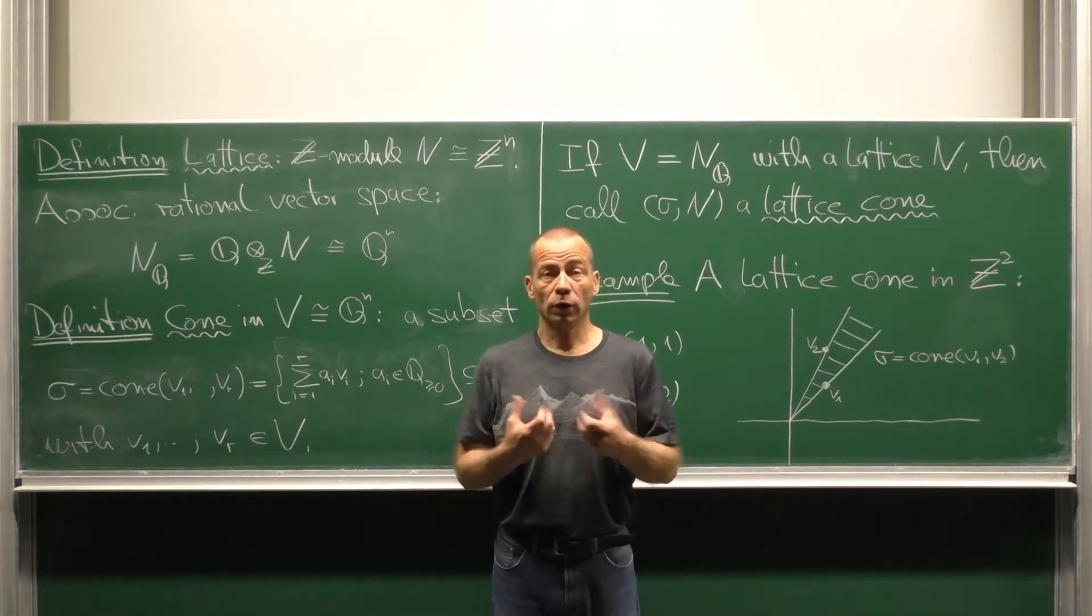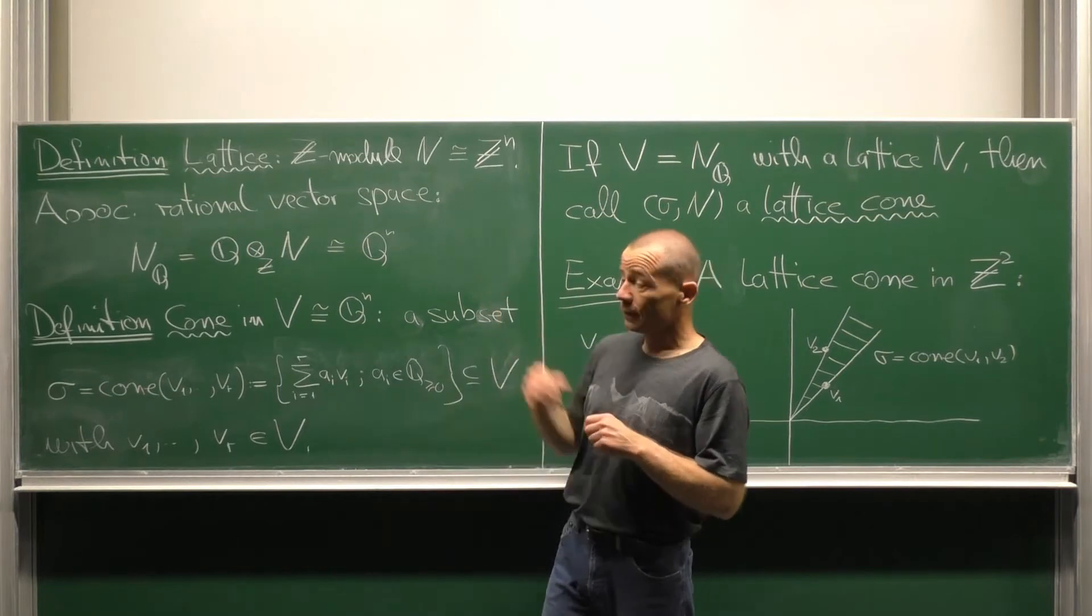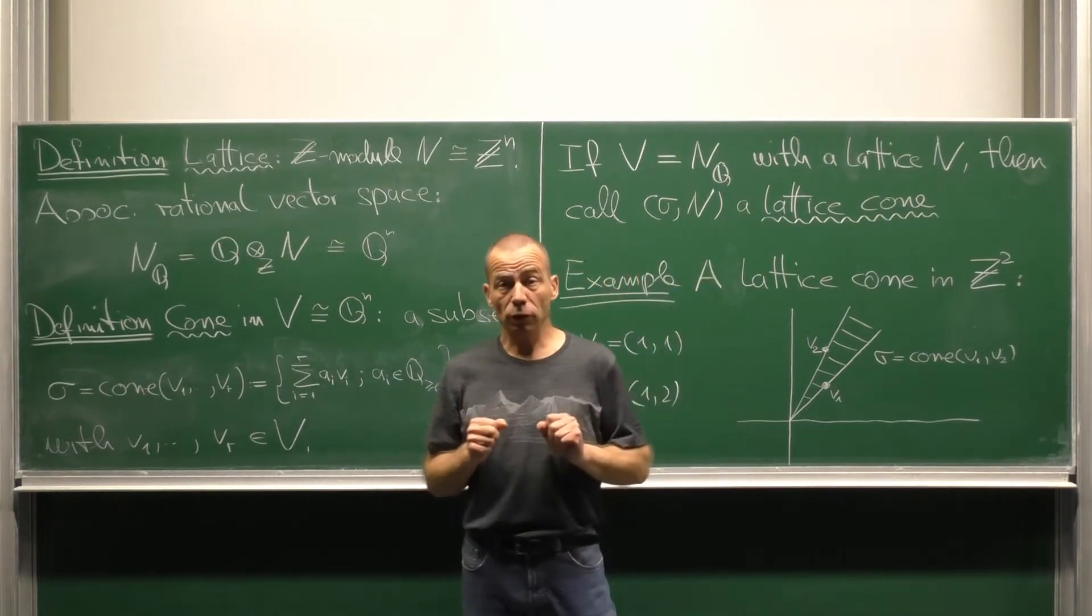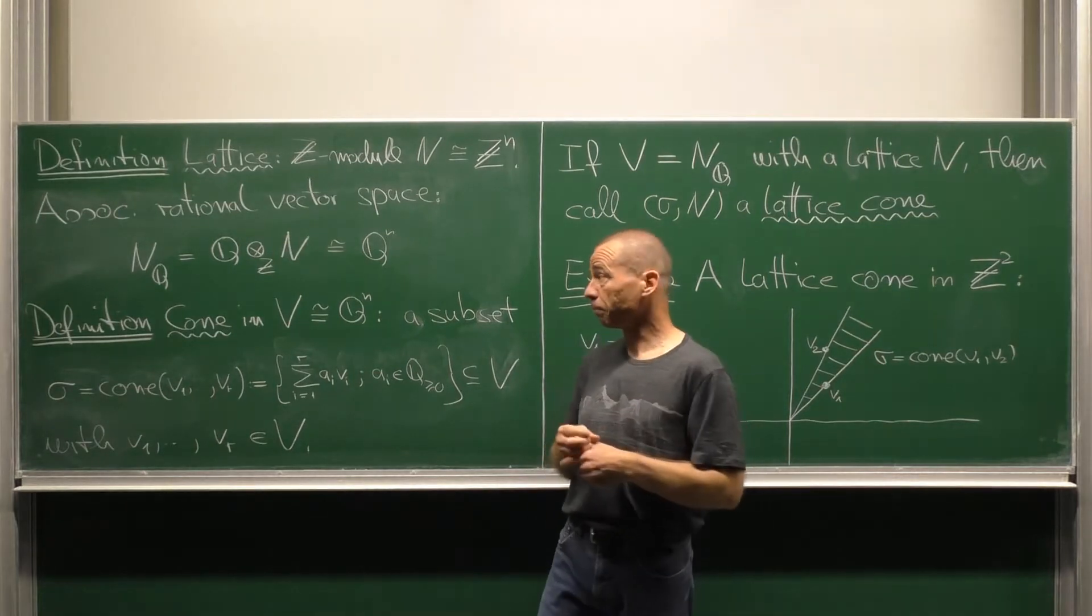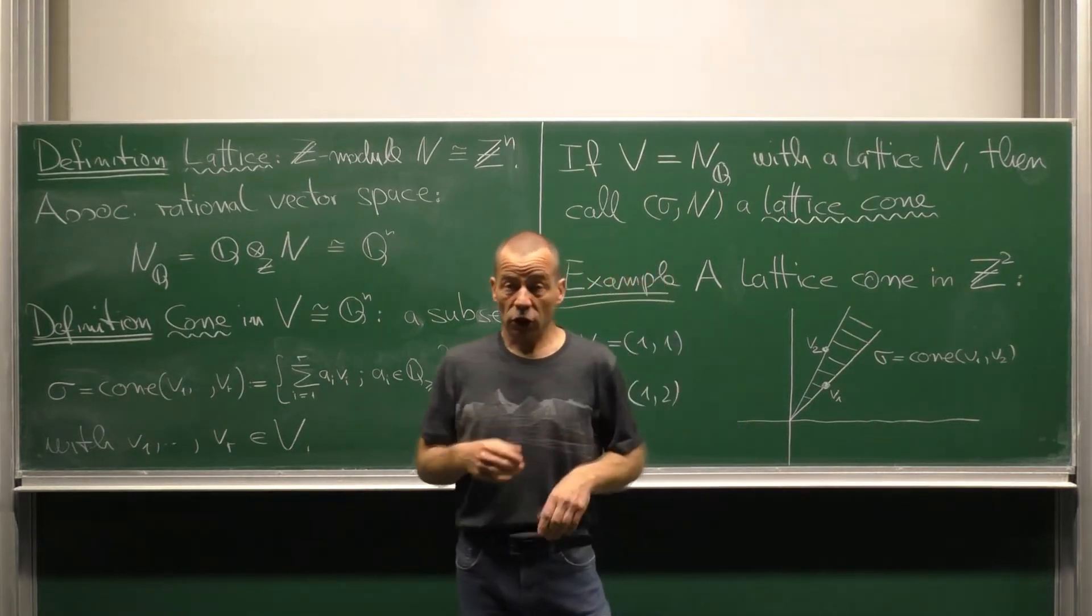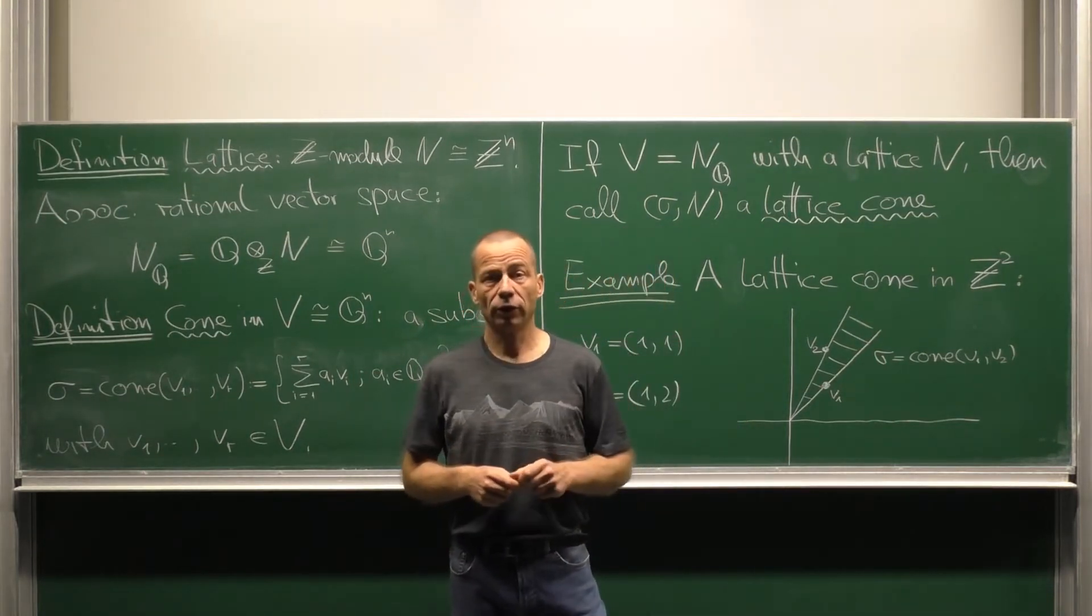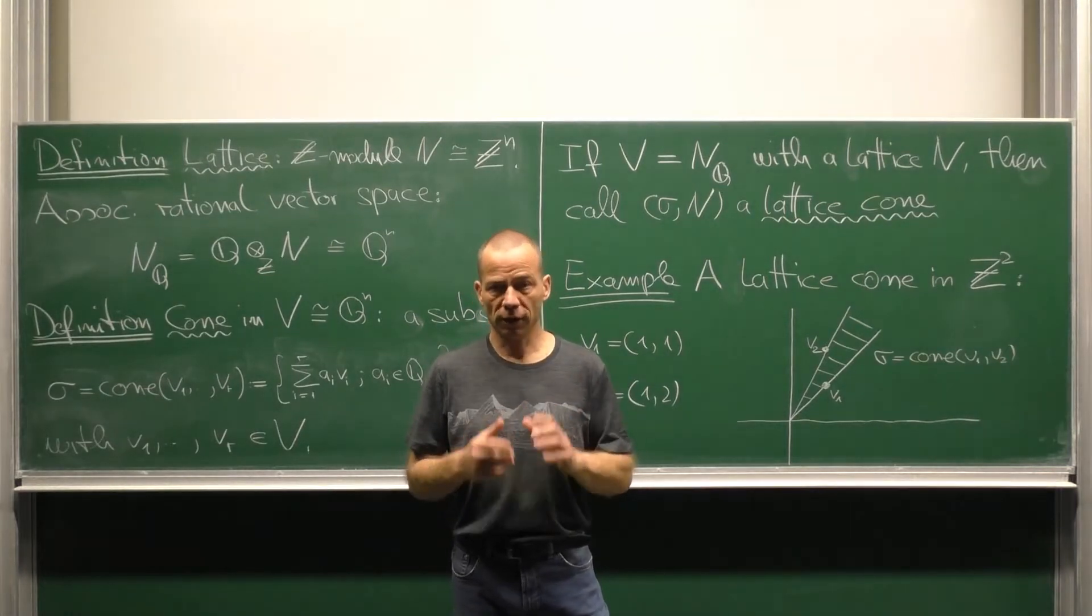First of all, what is a lattice? A lattice is a Z module isomorphic to some Z to the N. So a lattice is just a finitely generated torsion-free Z module.